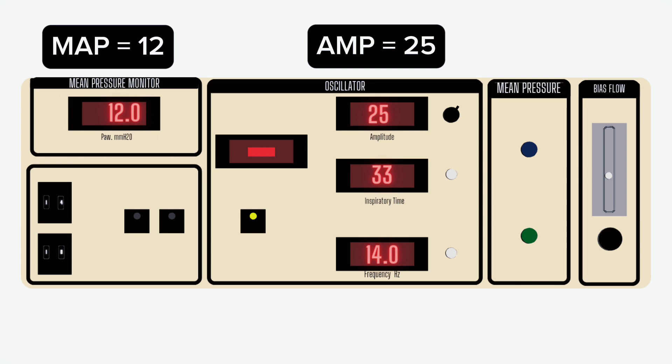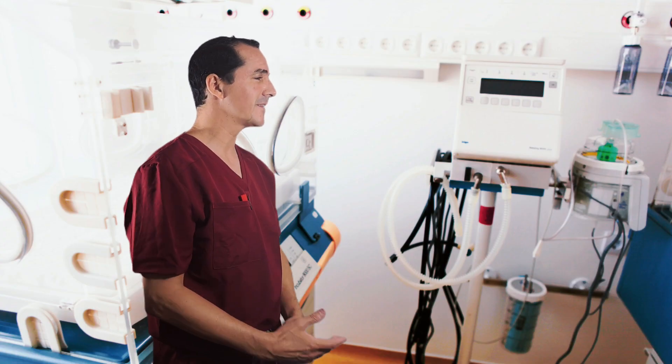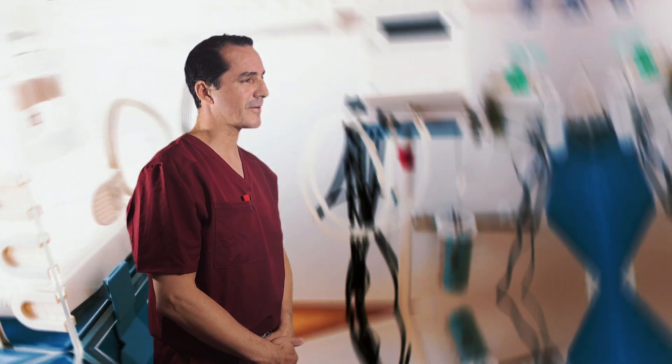Let's check those settings again. We're going to start on a MAP of 12, amplitude of 25, and hertz of 14. Why did you start these settings on the oscillator? When you're transitioning from mechanical ventilator to the oscillator, you have to decide which settings to start with. For mean airway pressure, you usually go up by two points from the mean airway pressure you see on the mechanical ventilator — you can see it displayed — and that will be your mean airway pressure on the oscillator.